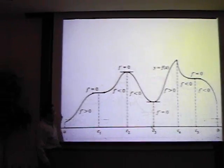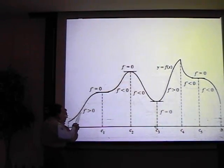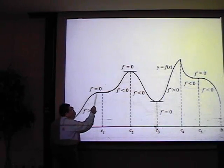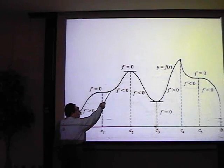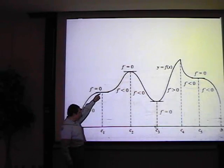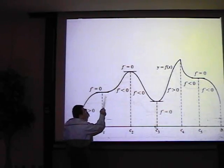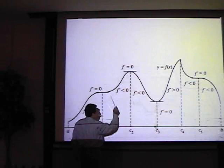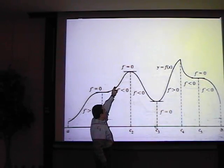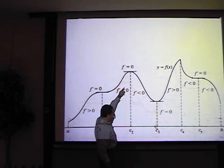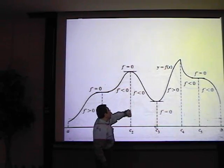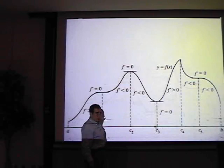The first derivative test says that if the slopes of the tangent lines are positive both before and after a critical point, we have no relative extreme value there — as at c1. At the next critical value c2, the slopes go from positive to negative, so we have a local maximum there.